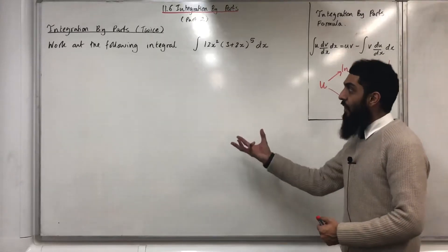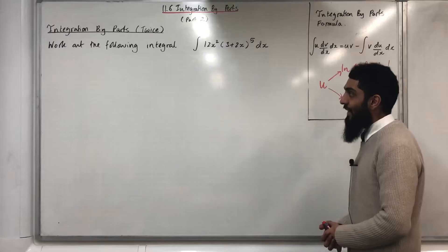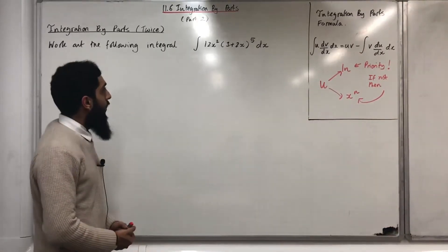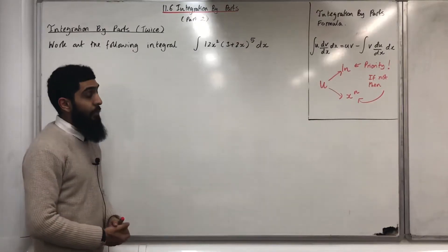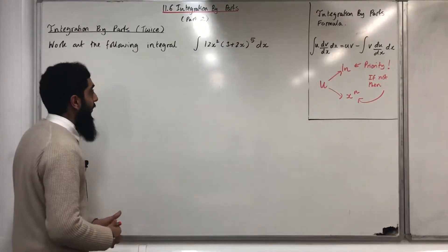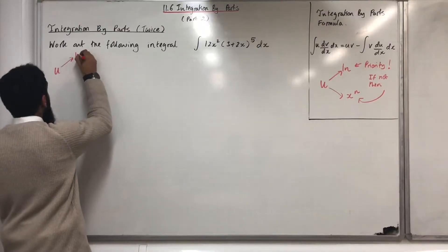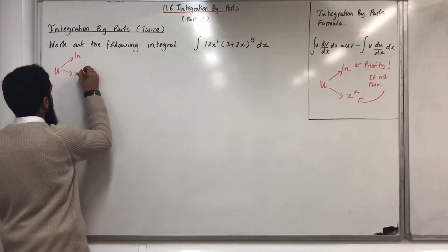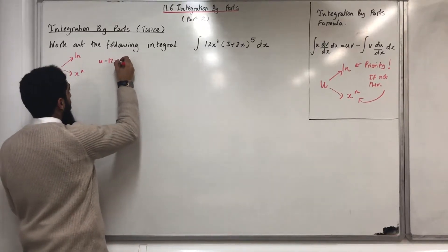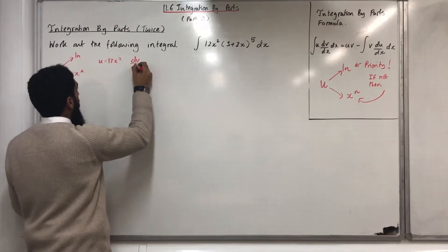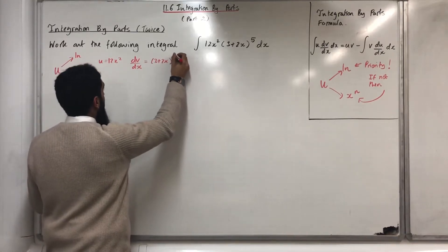Over here I have a question where you have to use integration by parts twice. Work out the following integral: the integral of 12x squared multiplied by (3 plus 2x) to the power 5 dx. The first step is to let u equal ln if not x to the power n. In this particular case, u is equal to 12x squared. Therefore, dv over dx is equal to (3 plus 2x) to the power 5.